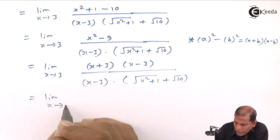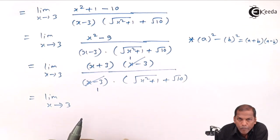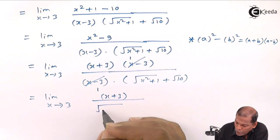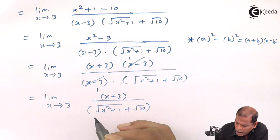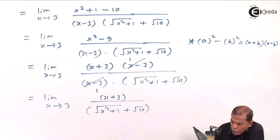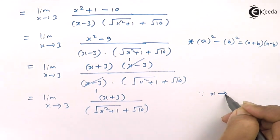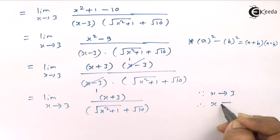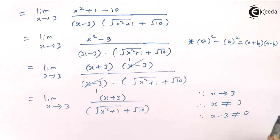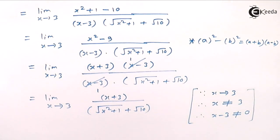This equals limit x tends to 3. Now here we cancel x minus 3 from numerator and denominator, so we are left with x plus 3 in the numerator upon square root of x squared plus 1 plus square root of 10 in the denominator. For that purpose we give the reason: since x tends to 3, it means x is not equal to 3, which means x minus 3 is not equal to 0, so cancellation is valid.